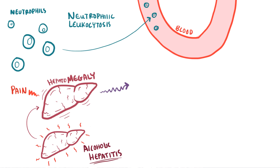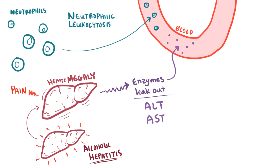The damage done to hepatocytes also results in leakage of liver enzymes like alanine aminotransferase, or ALT, and aspartate aminotransferase, or AST — both types of transaminase. Usually, even though both are elevated, AST will be found to be greater than ALT in alcoholic hepatitis. In addition to these two, serum alkaline phosphatase, or ALP, and gamma-glutamyltransferase, or GGT, will also be elevated.